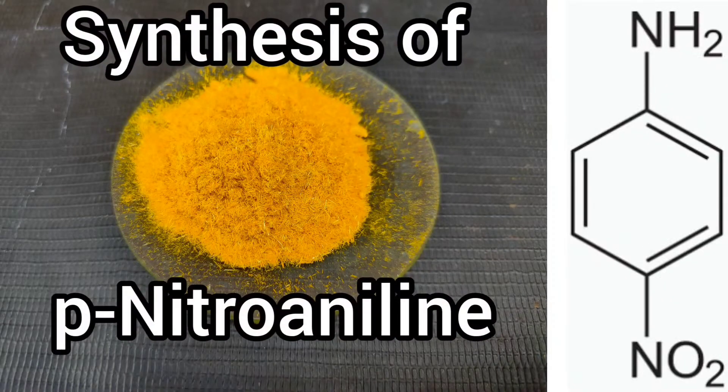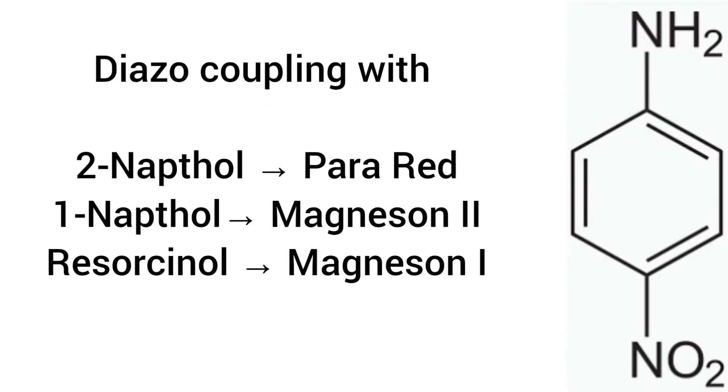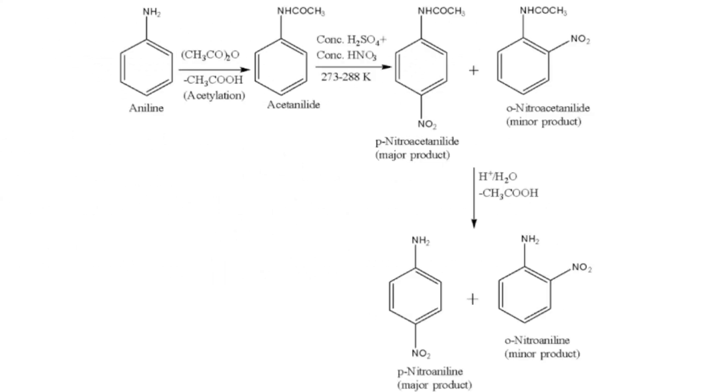Para-nitroaniline is a precursor to many azodyes like Para Red, Magneson 1 and 2. It is prepared by nitrating acetanilide and then hydrolyzing the latter. It is not prepared directly from aniline because oxidation of aniline occurs and unwanted products are formed.